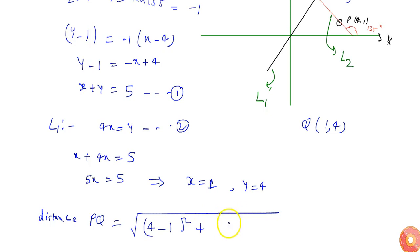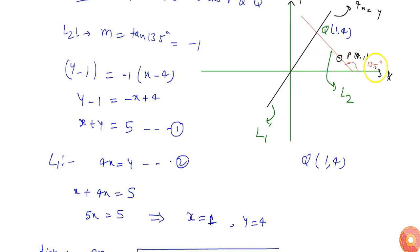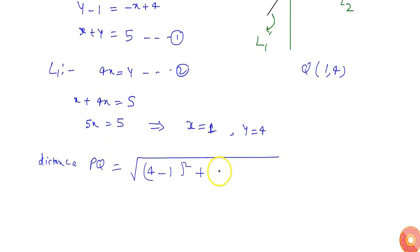Plus y2 is 1, so 1 minus y1 is 4, whole square. It will be under root: 4 minus 1 is 3, 3 squared will be 9.